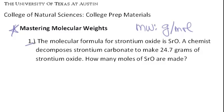The molecular formula for strontium oxide is SrO. A chemist makes 24.7 grams of it, and we need to find how many moles of strontium oxide there are. The first step is to find the molecular weight.